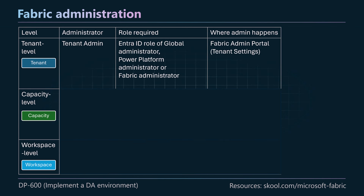Starting at the top: we've got the tenant admin. To get the rights to be a tenant admin, we actually go higher than Fabric — we need an Entra ID role of global administrator, power platform administrator, or Fabric administrator. They'll be working predominantly in the Fabric admin portal. If you have any of these three roles, that's going to be available to you and you can configure your tenant settings in there.